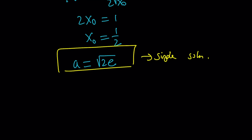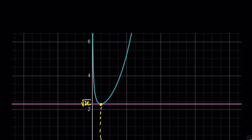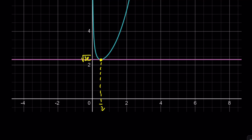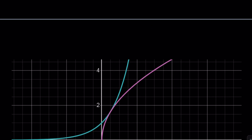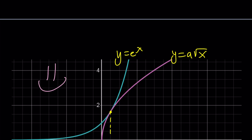To summarize: we looked at two graphical interpretations — the graph of e^x/√x with a horizontal line y = a, and the graphs of y = e^x and y = a√x — and in both cases they are tangent at x = 1/2, confirming a = √(2e). Thank you for watching, I hope you enjoyed it. Please comment, like, and subscribe — I'll see you next time. Until then, be safe, take care, and bye bye.